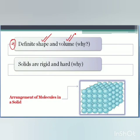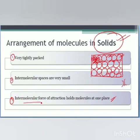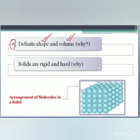Solids have a definite shape and definite volume. But why? Suppose you have kept a book on the table. After some time you will observe the same book has the same volume as well as the same shape — it has not changed. This is because the intermolecular forces of attraction hold the molecules at one place. When the molecules cannot move, they cannot change their shape or volume. Therefore, this is a property of solids: they cannot change their shape or volume.